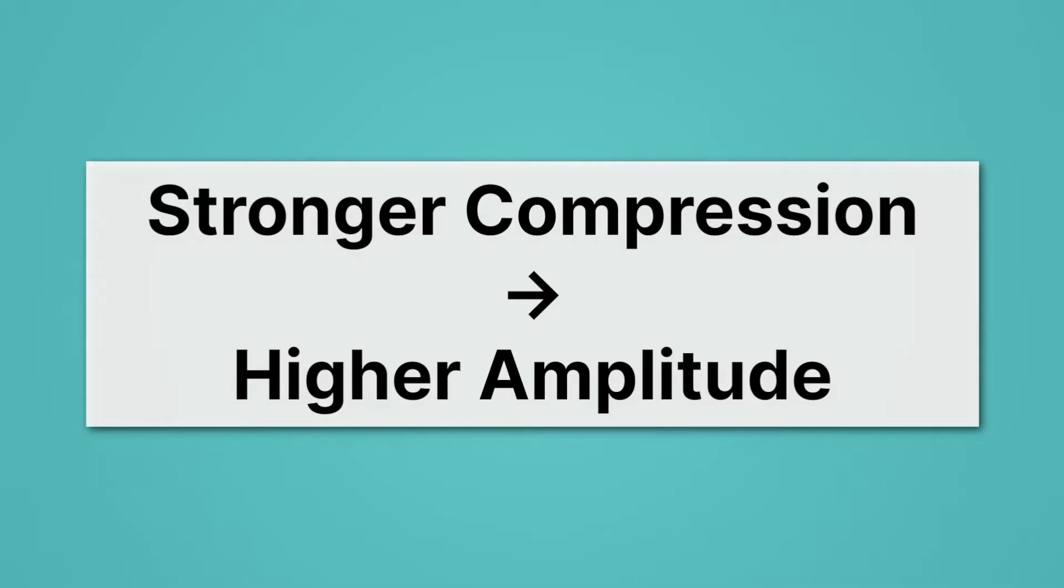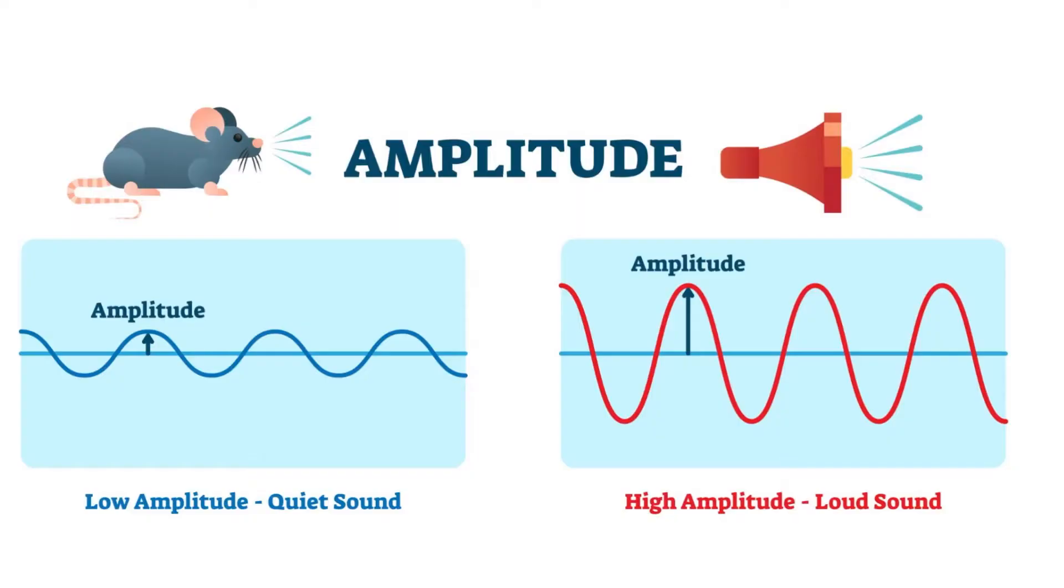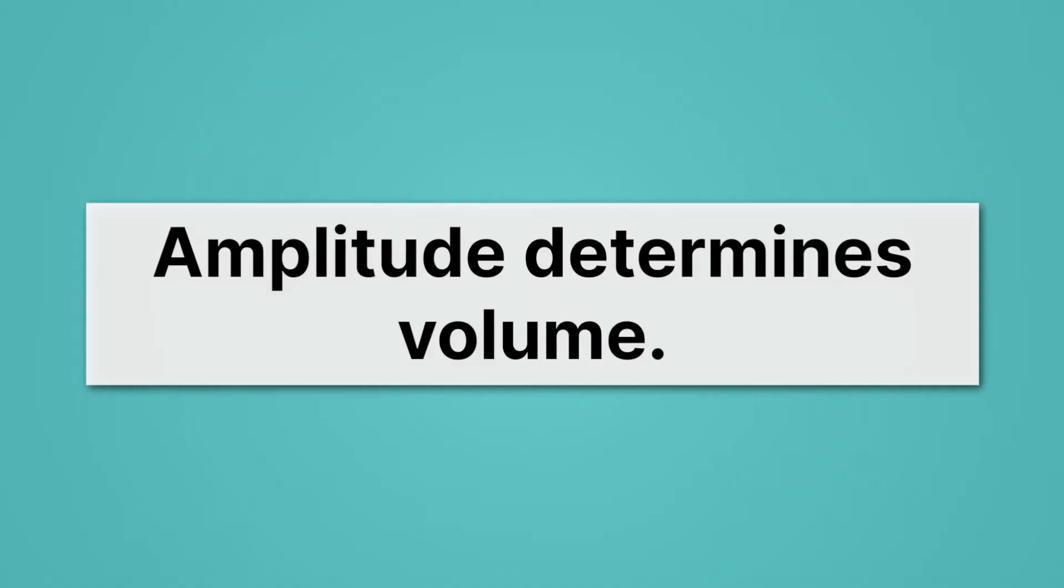Remember that stronger compression means higher amplitude. Well what does amplitude do for sound and how we experience it? Well take this little mouse here on the left, he creates a low amplitude sound wave. So we experience that as being quite quiet, the compressions are not very strong. The megaphone on the right on the other hand creates an enormous compression, which gives us a high amplitude and a loud sound. So remember that amplitude determines volume.